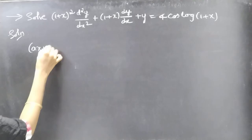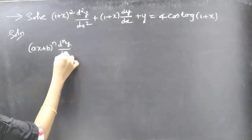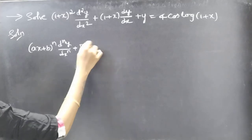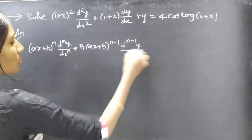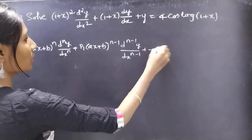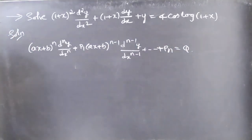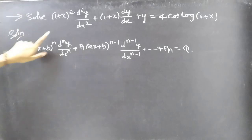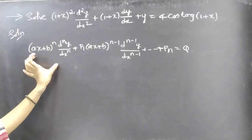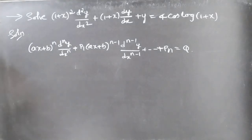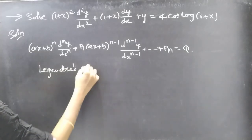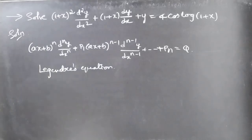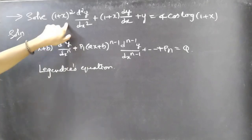The given differential equation is of the form (ax+b)^n · d^n y/dx^n + p₁(ax+b)^(n-1) · d^(n-1)y/dx^(n-1) + ... + pₙ = f(x), for n equal to 2. The given equation is of this form for n=2, so we call it Legendre's equation of order 2.